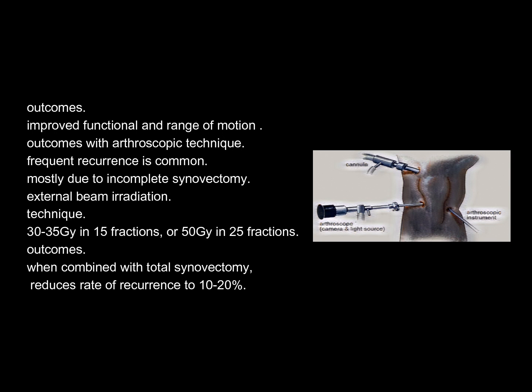Outcomes: Improved functional range of motion with arthroscopic technique; however, frequent recurrence is common, mostly due to incomplete synovectomy. External beam irradiation — technique: 30–35 Gy in 15 fractions, or 50 Gy in 25 fractions. When combined with total synovectomy, this reduces the rate of recurrence to 10–20%.